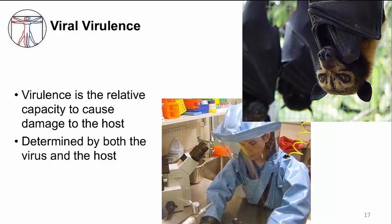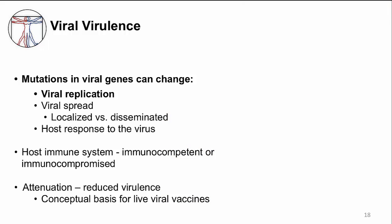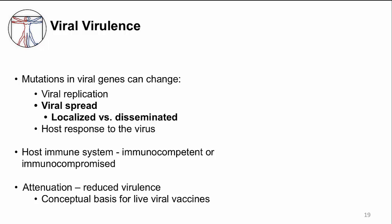In virology, the determinant of virulence is predominantly based on viral genetics, with a focus on mutations in viral genes. Different strains of a virus may have different virulence because of mutations in these genes. This could result in changes to viral replication — for example, higher replication rates may be associated with higher virulence. Mutations could also change the way the virus spreads, so if the virus can disseminate more widely, that may be associated with higher virulence. Mutations can also change the way the host responds to the virus, with a mutated virus potentially able to decrease host defenses — this is the idea of the virus modulating the host immune response.